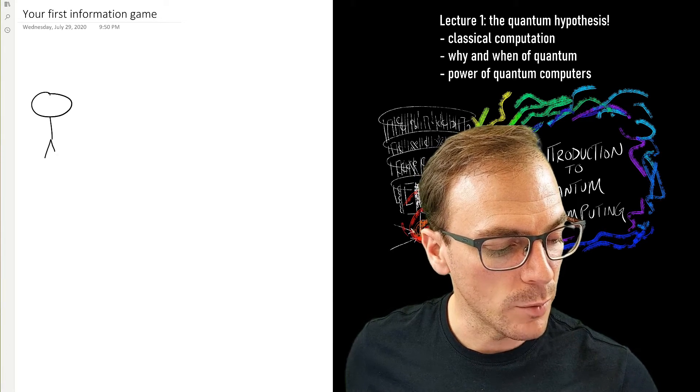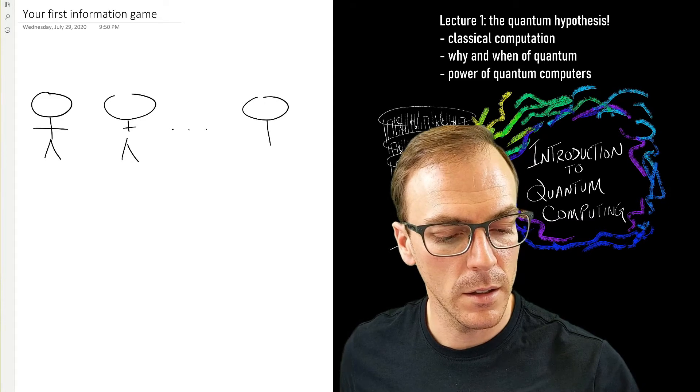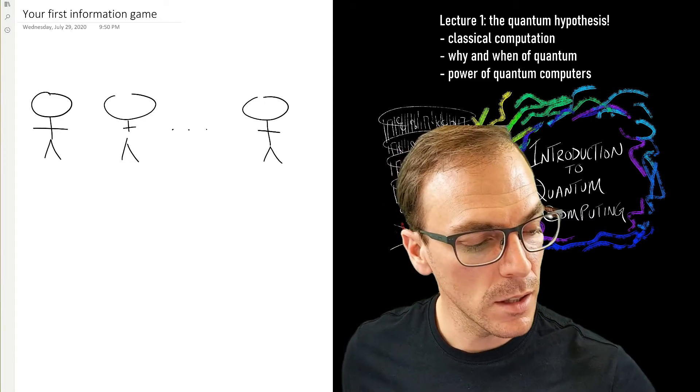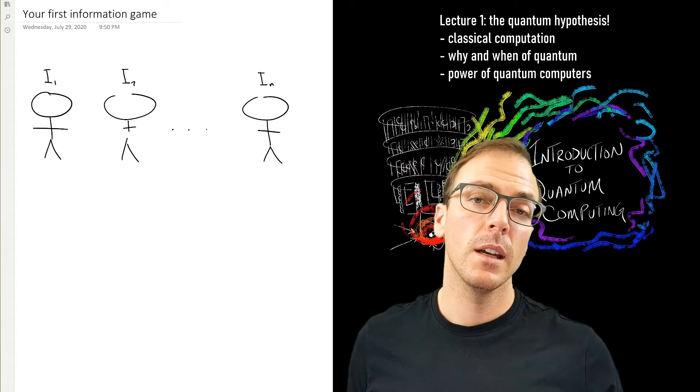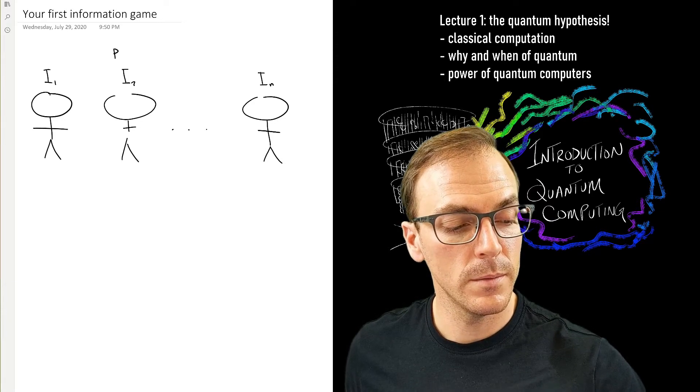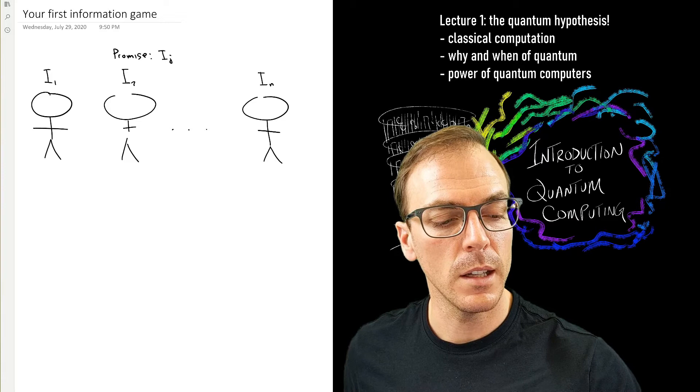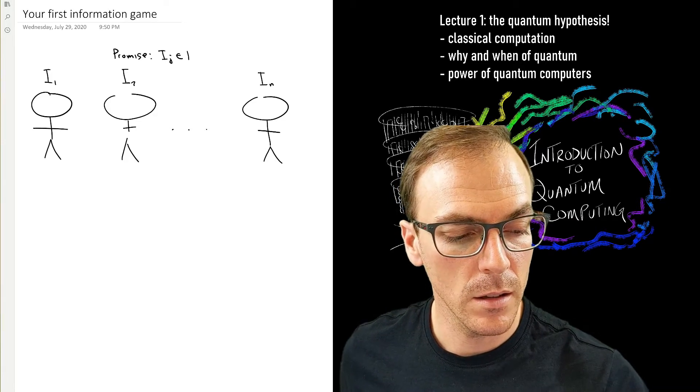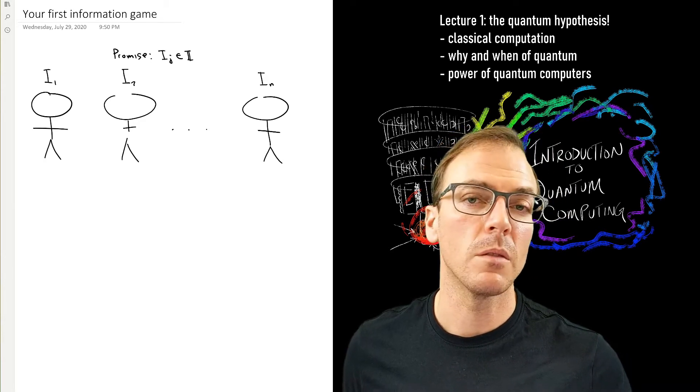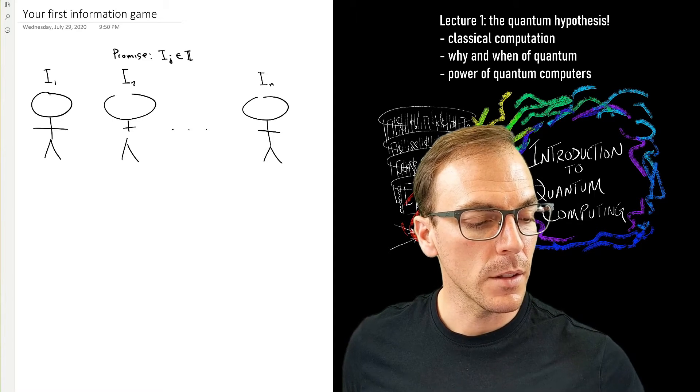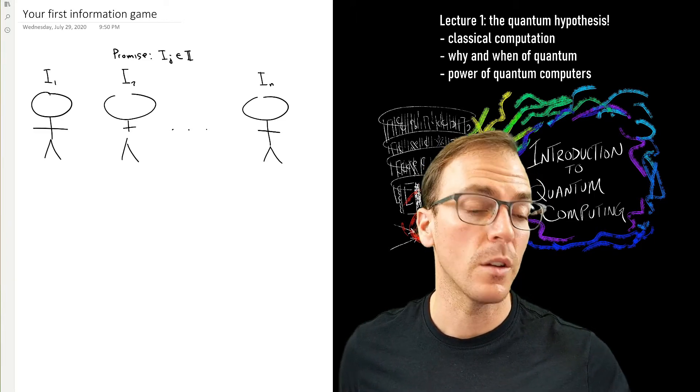So imagine we have a bunch of players. Here they all are. And let's say there's n players. How does this game work? They're each given a piece of information. And let's make the promise that each of these, so any i sub j, is an integer. So player 1 might be given the number 5, player 2, 2, and the nth player might be given 7.